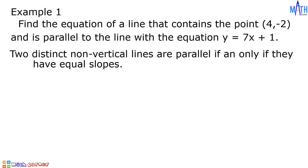In other words, two lines are parallel if the slopes are equal. In this example, since the line that contains the point (4, -2) is parallel to the line y = 7x + 1, let us determine the slope of this line.